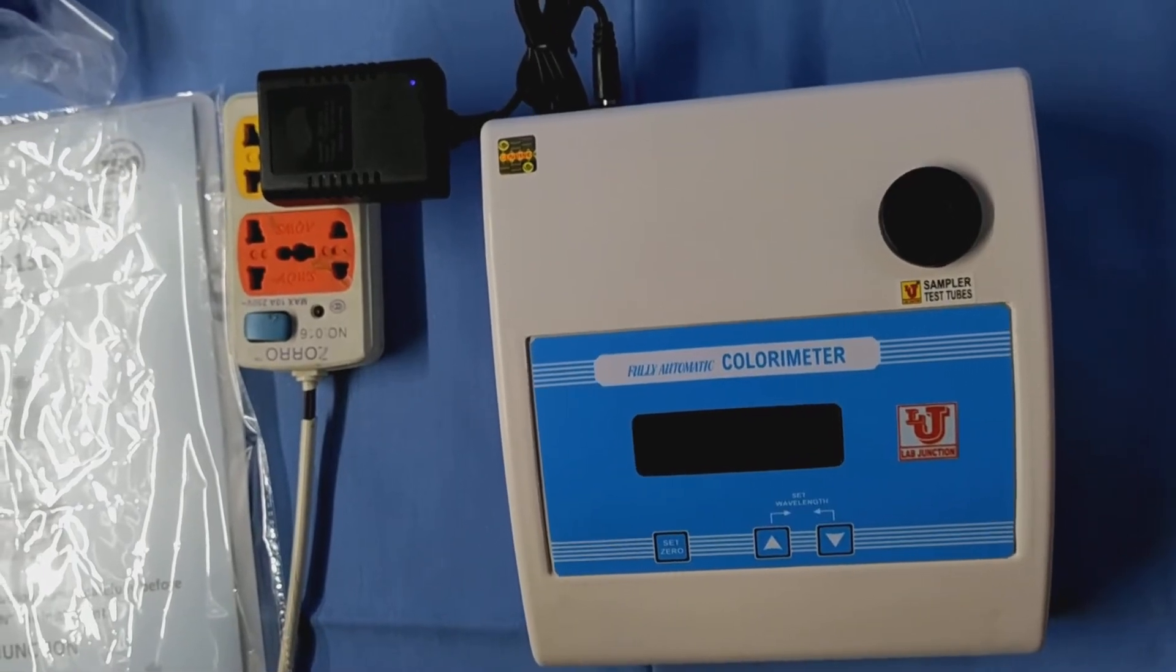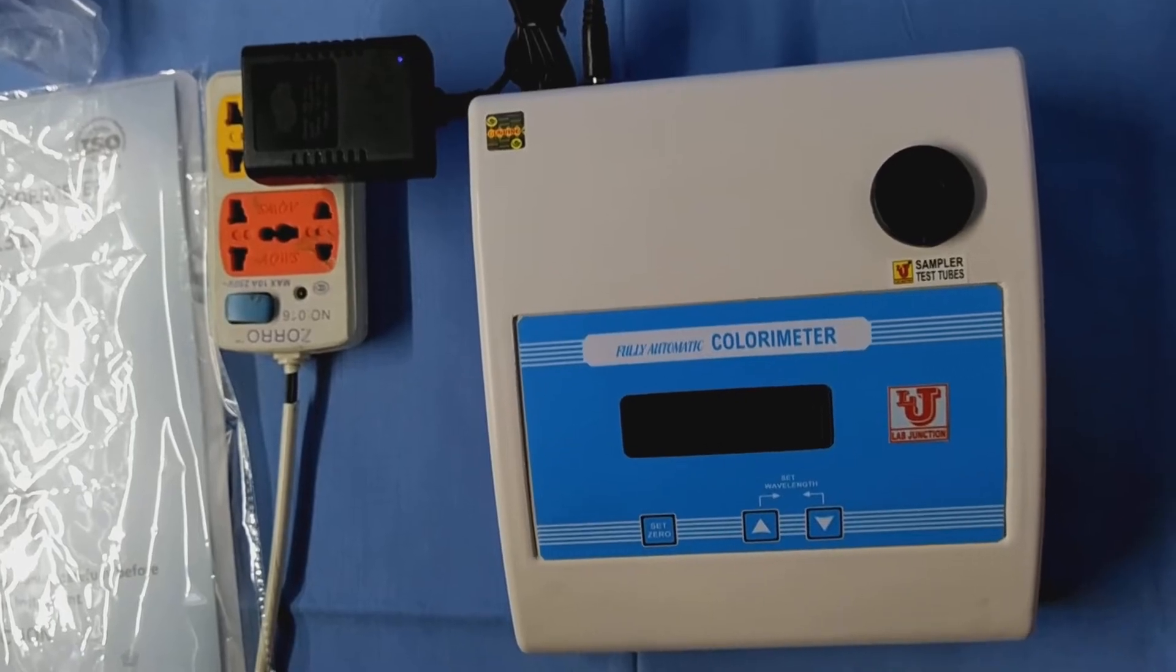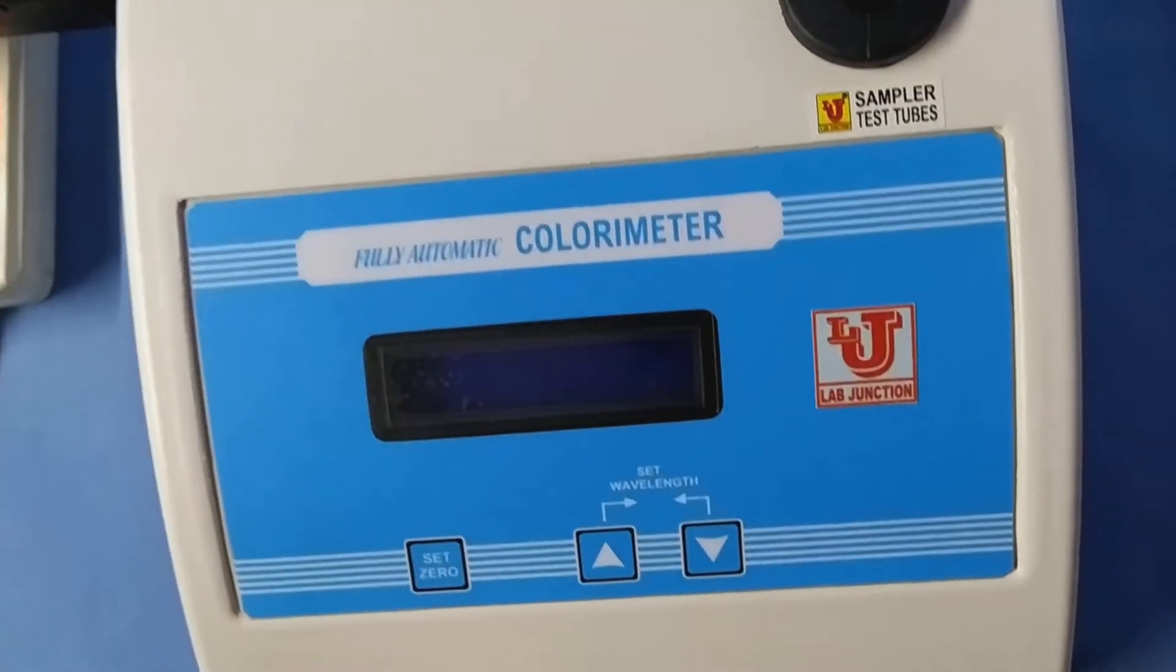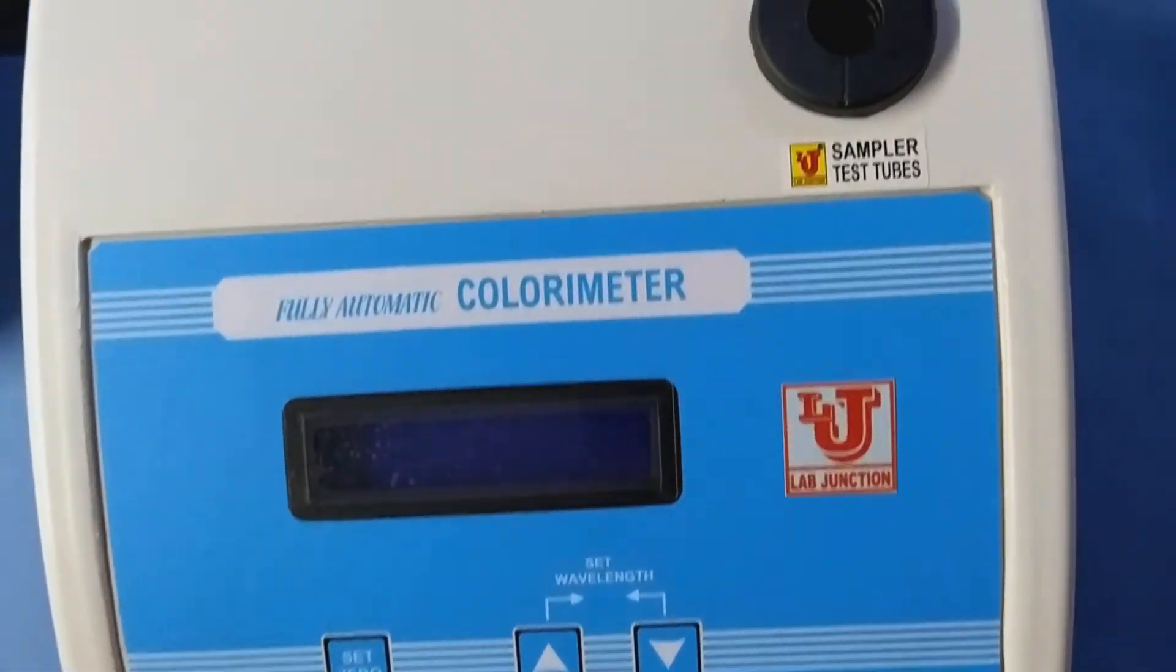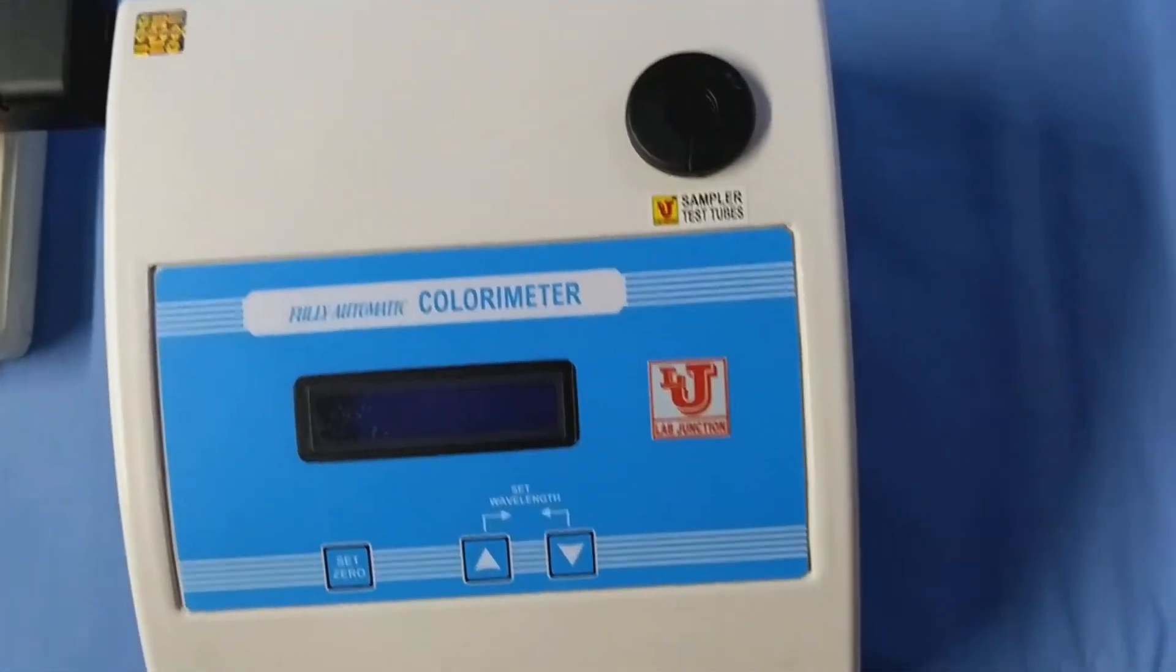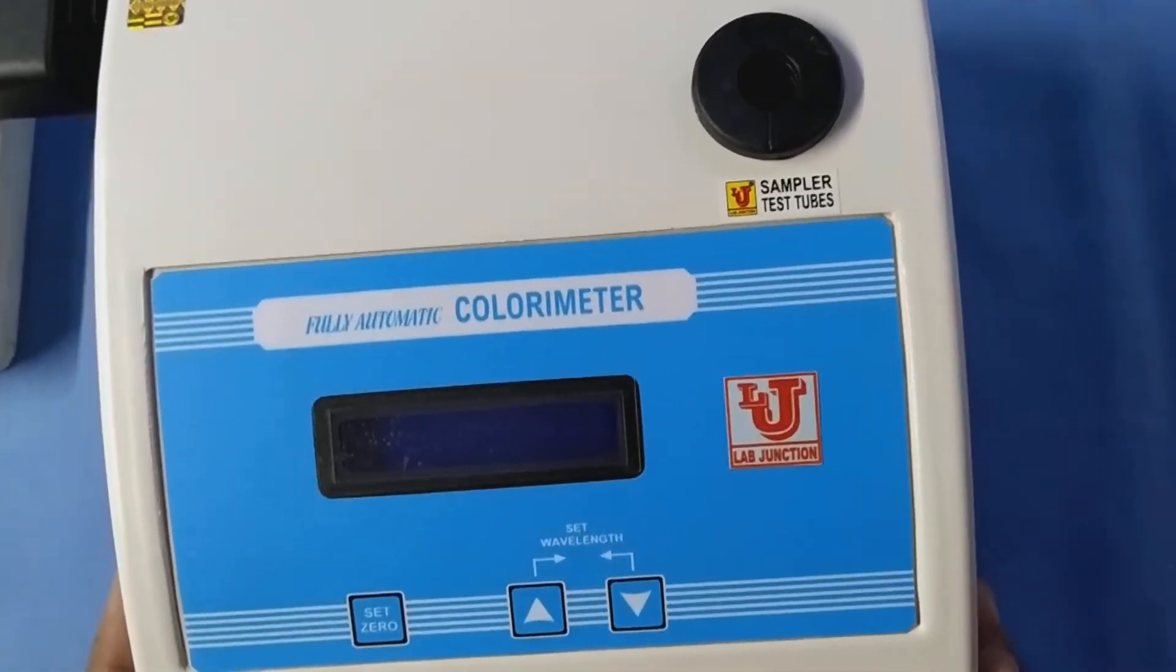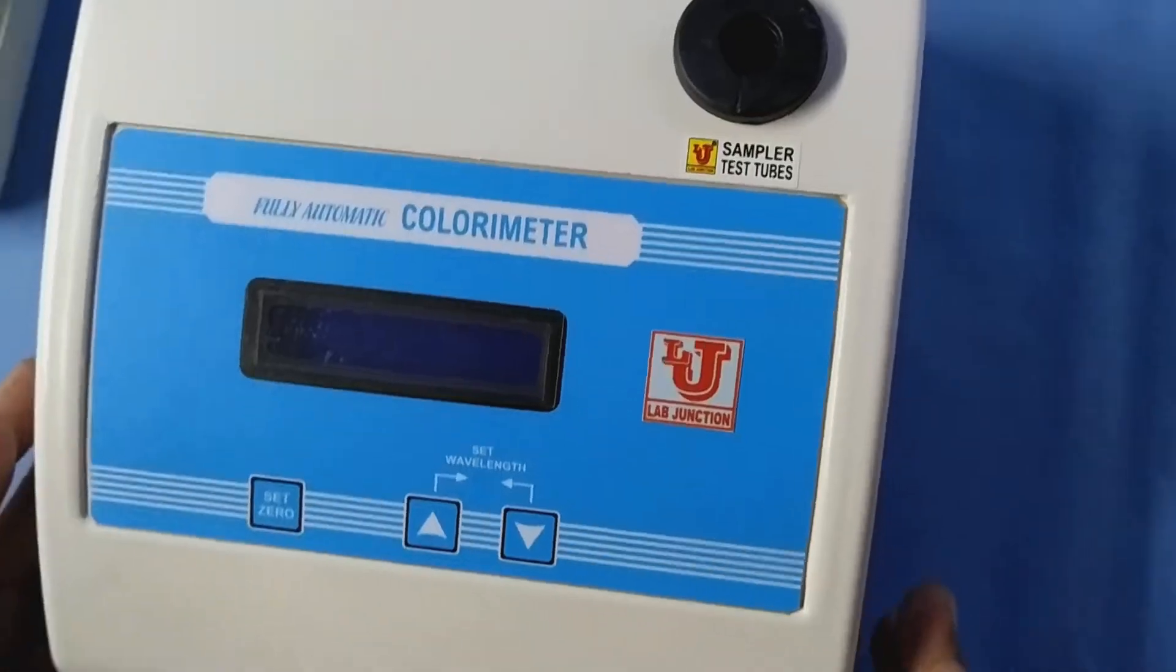Lab Junction's Fully Automatic Colorimeter Model LJ1318. This colorimeter has 9 filters. This is our main instrument. These are the front view and side views.